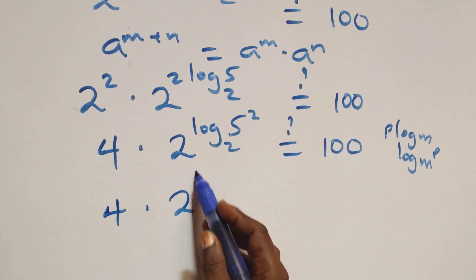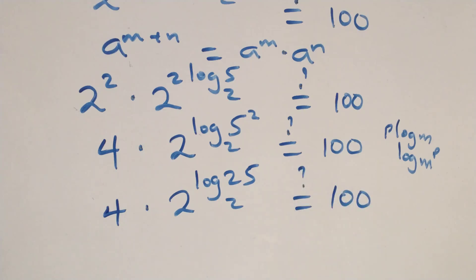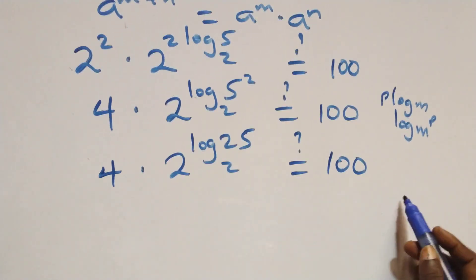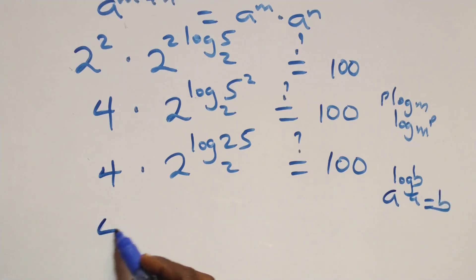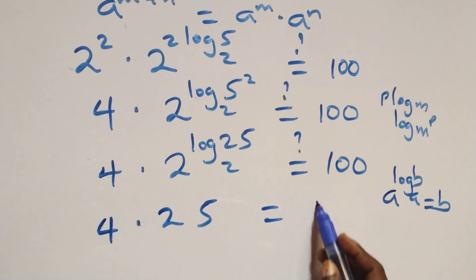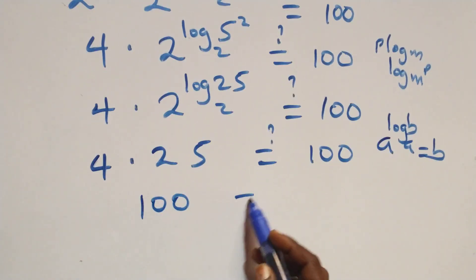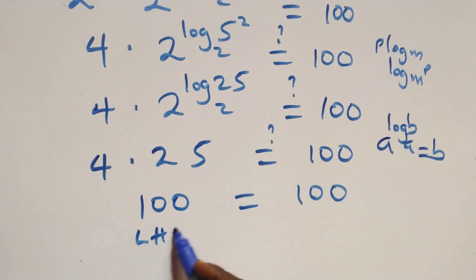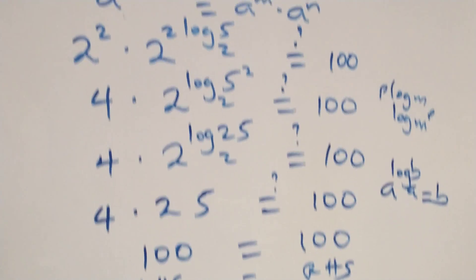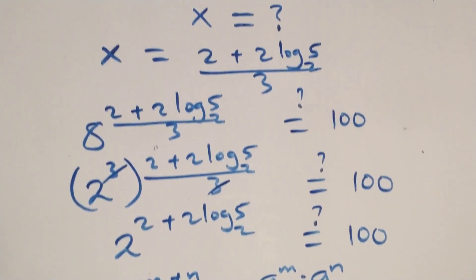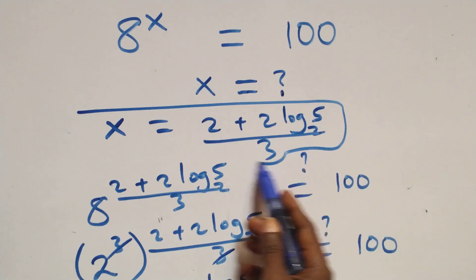We have 4 times 2 raised to power log₂(5 squared), where 5 squared is 25. Applying the rule a^(log_a(b)) = b, we get 4 times 25, which equals 100. So 4 times 25 equals 100, which equals 100 on this side. Therefore x equals to (2 plus 2·log₂5) over 3 satisfies the given problem.